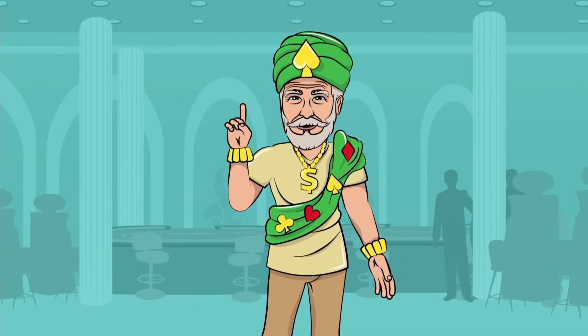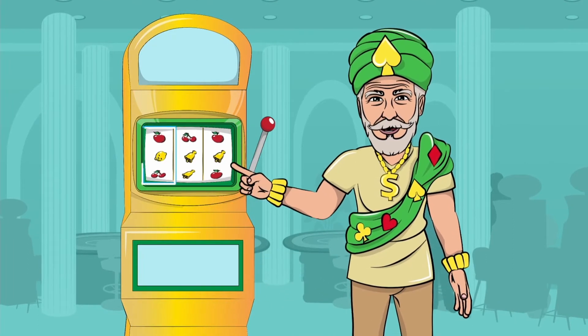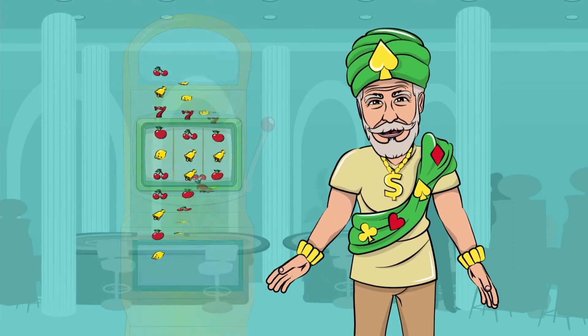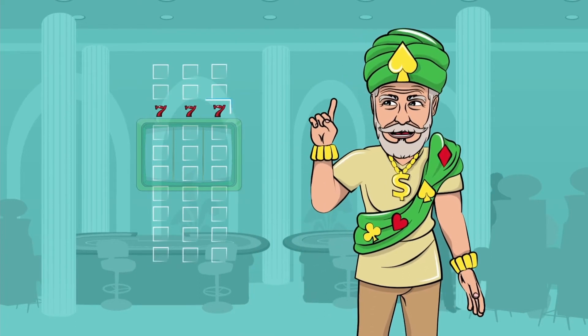Let's take a look at an example. Imagine a very simple slot machine with three reels and ten symbols on each reel. On each reel, there are nine blanks and one seven symbol.